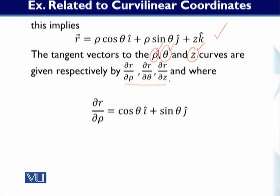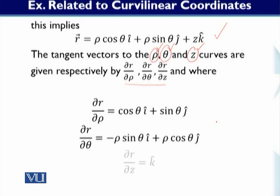This gives us the first tangent vector with respect to rho. Then partial R over partial theta becomes minus rho sin(theta) i + rho cos(theta) j. And at the end, partial R over partial z is equal to the unit vector k.